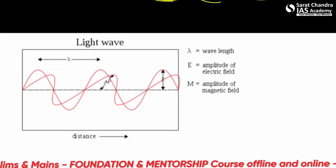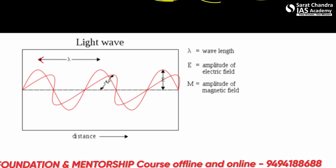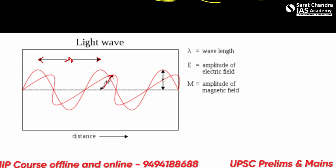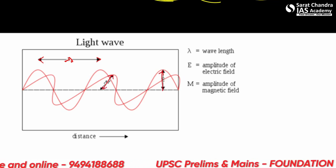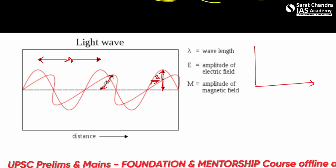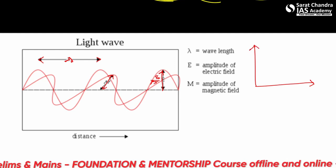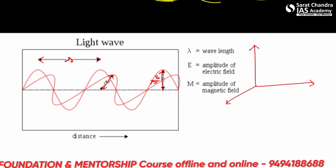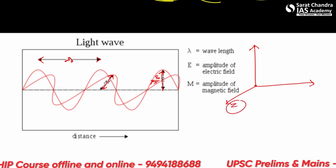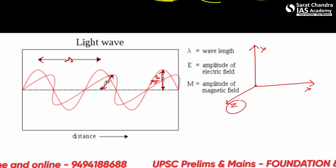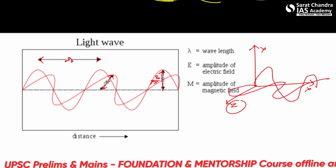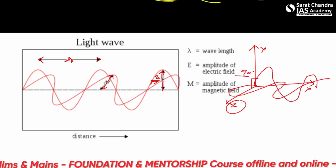Looking at the components of a light wave: lambda represents the wavelength. The magnetic portion and the electric portion of the wave are at a 90-degree angle to each other. Since we are in a two-dimensional space, we can only see the x and y axes; the z-axis is invisible. So one component goes in one direction and the other perpendicular to it — they are 90 degrees to each other.